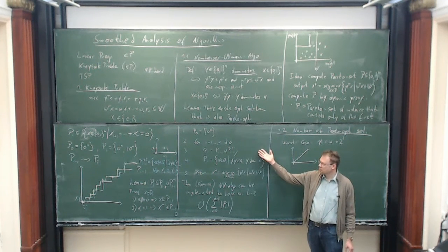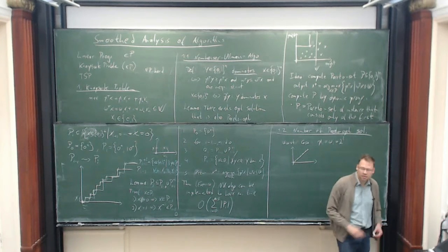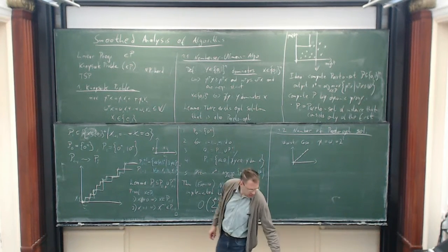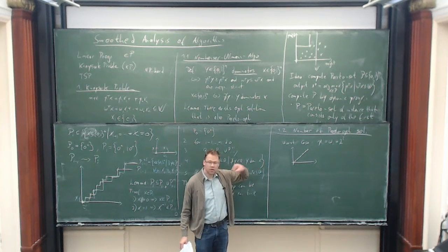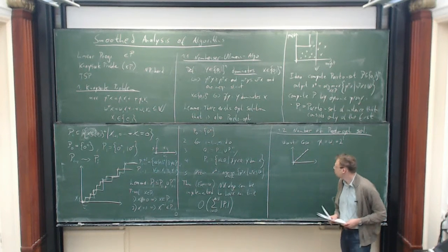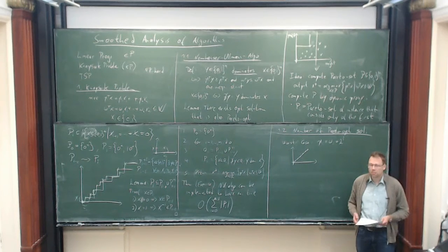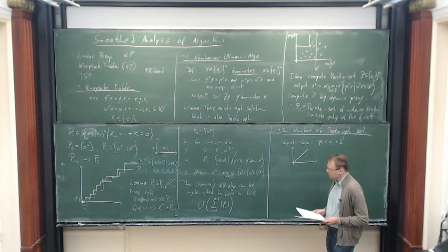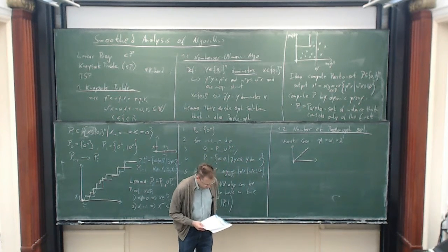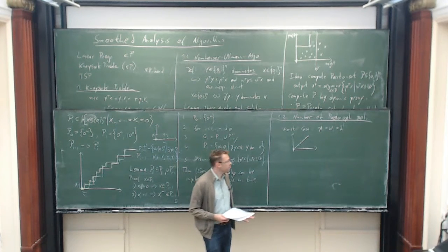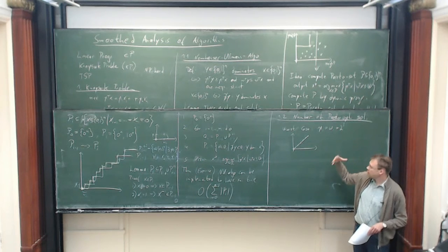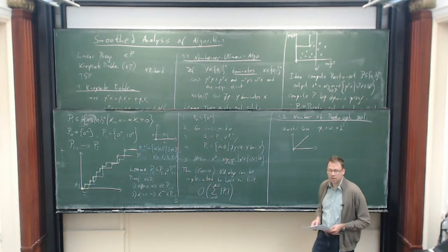In the worst case, this algorithm is really useless — it would be more efficient to just enumerate all solutions. But if you do experiments, it turns out that usually the number of Pareto-optimal solutions observed is much smaller. If you do experiments on random inputs, it's a small polynomial usually. I would like to try to explain this. As I mentioned in the beginning, the tool we are using is some kind of probabilistic analysis — we will go away from this worst-case perspective and go to some perspective where we have some randomness in the inputs.